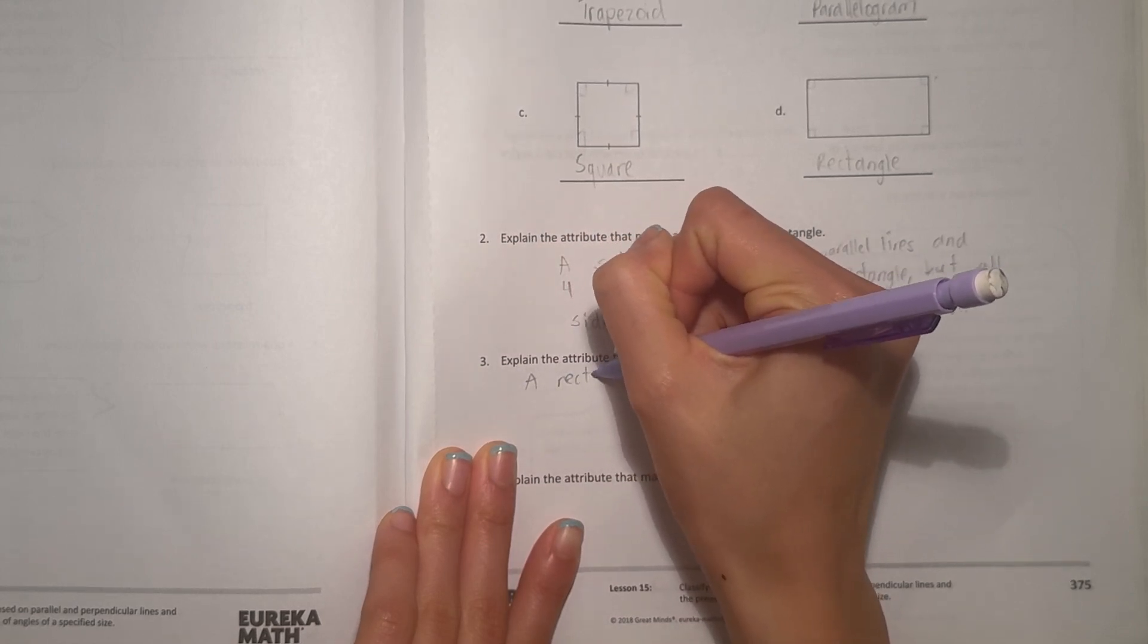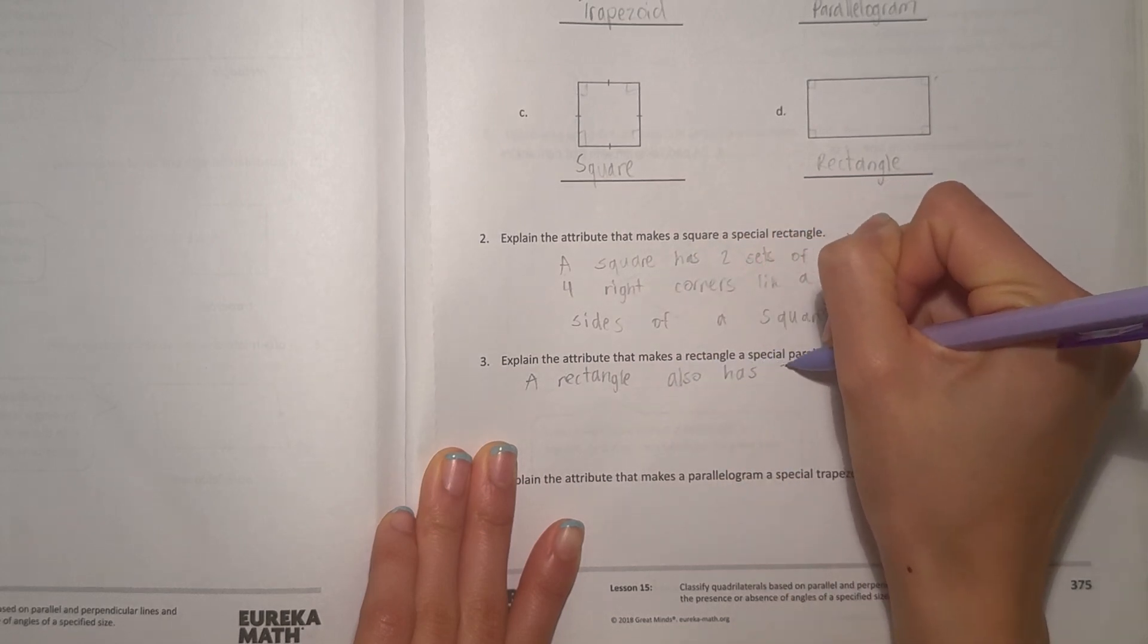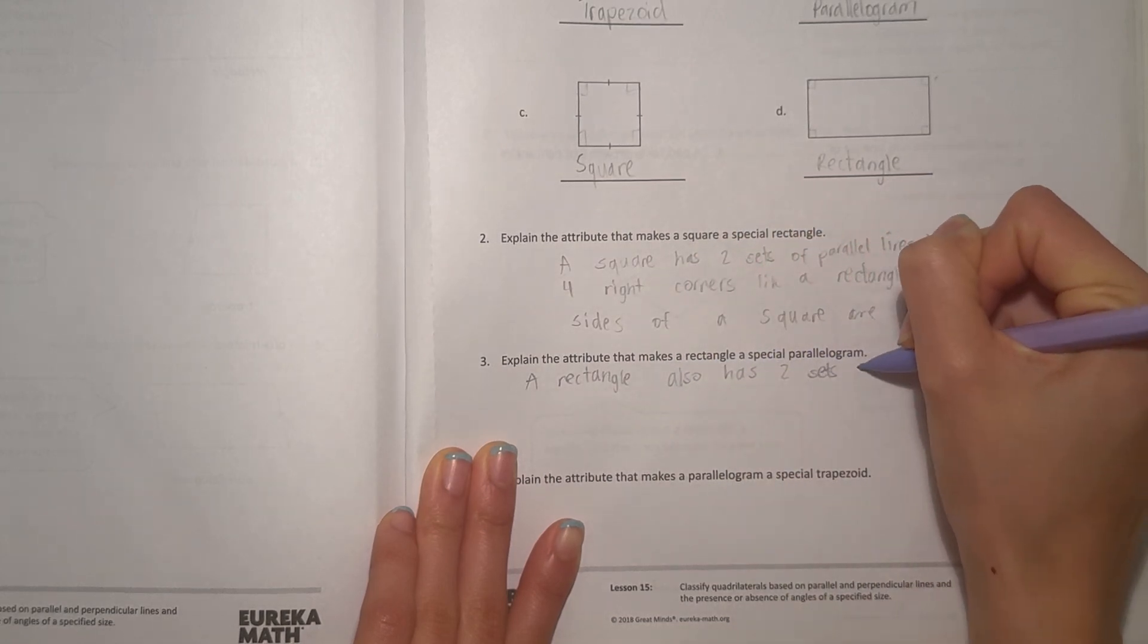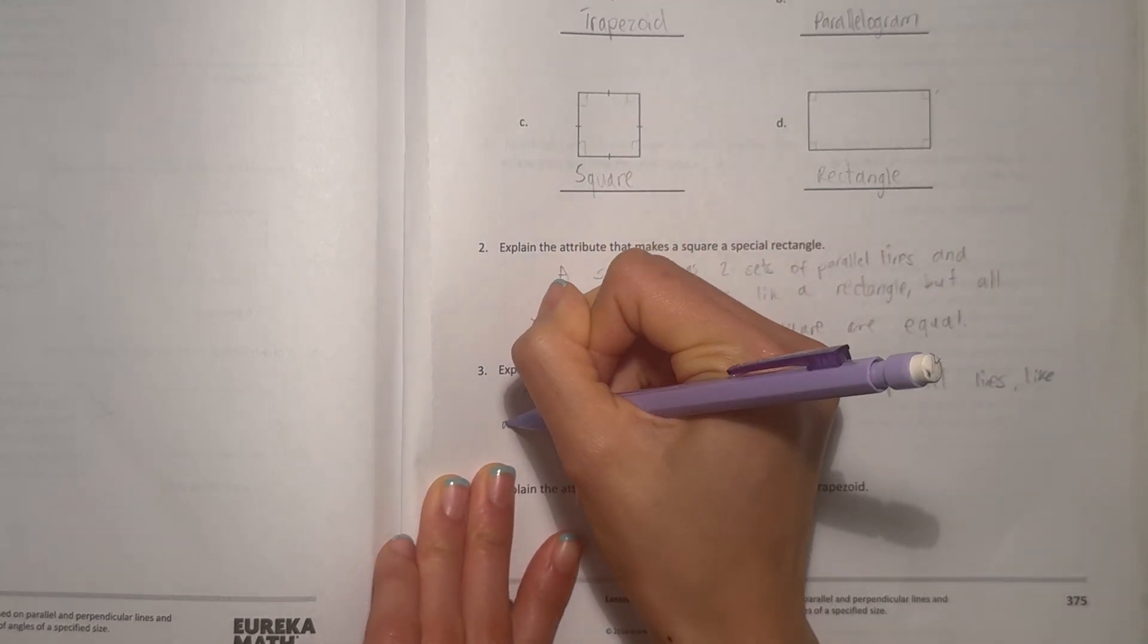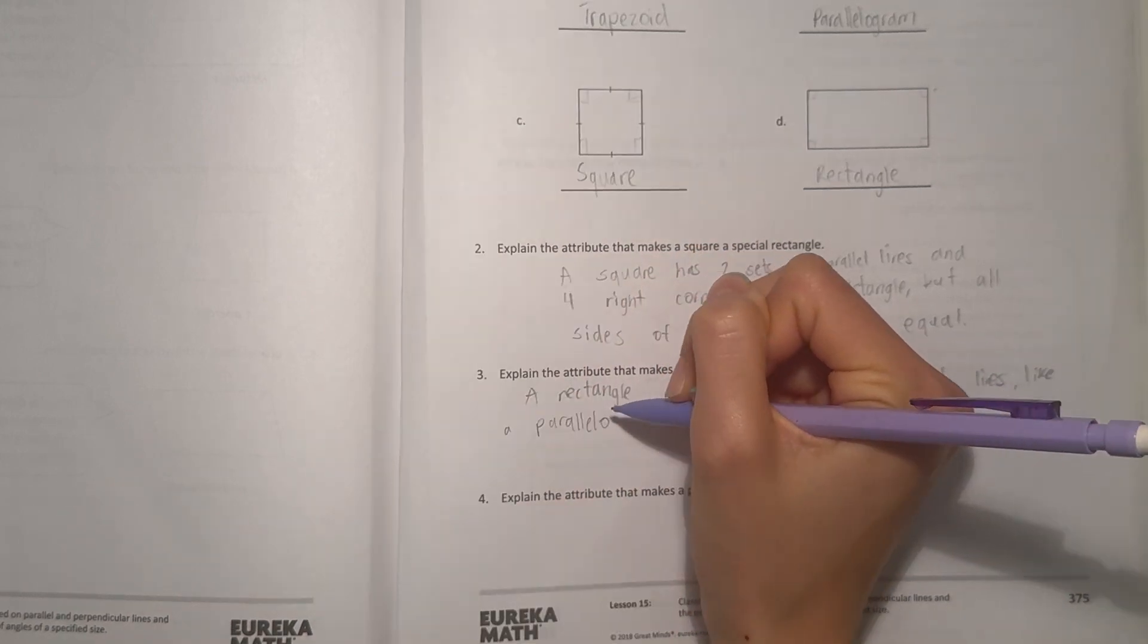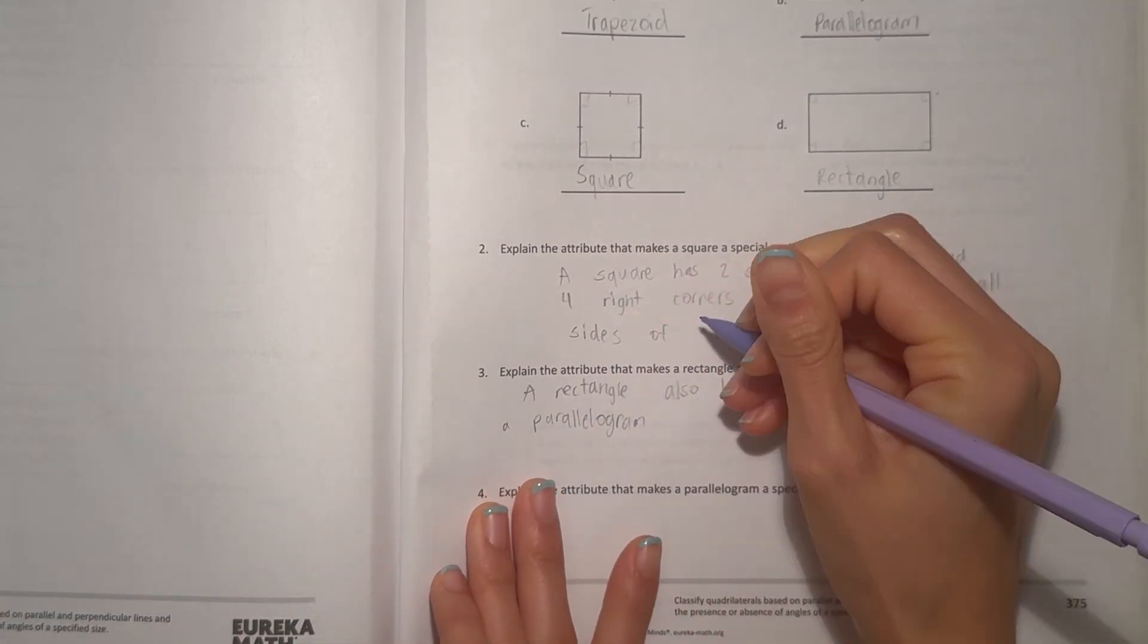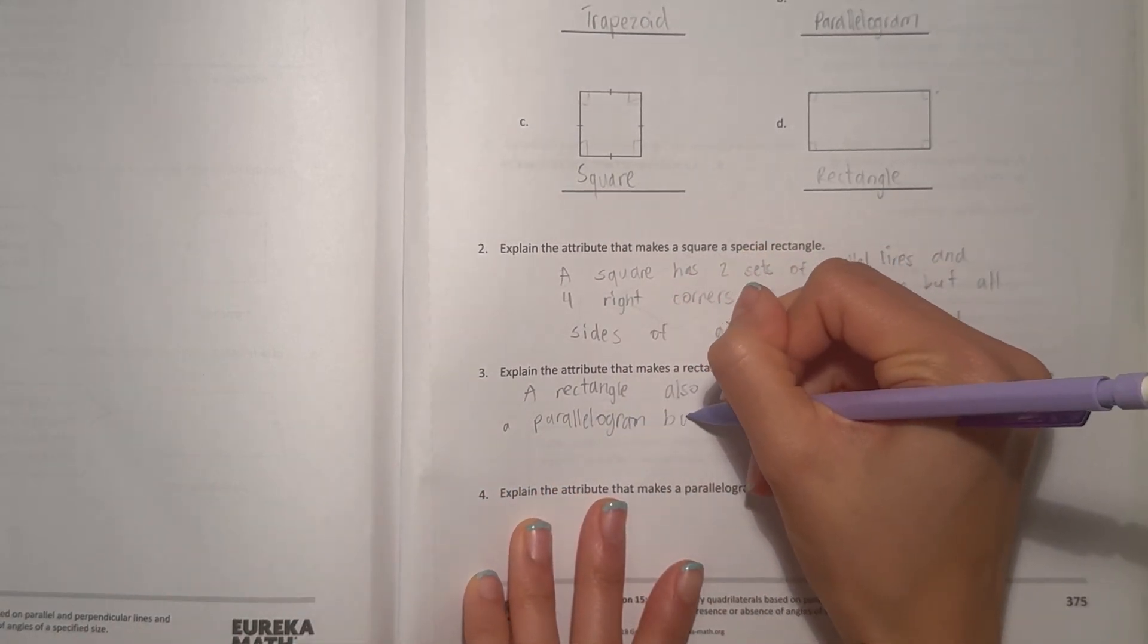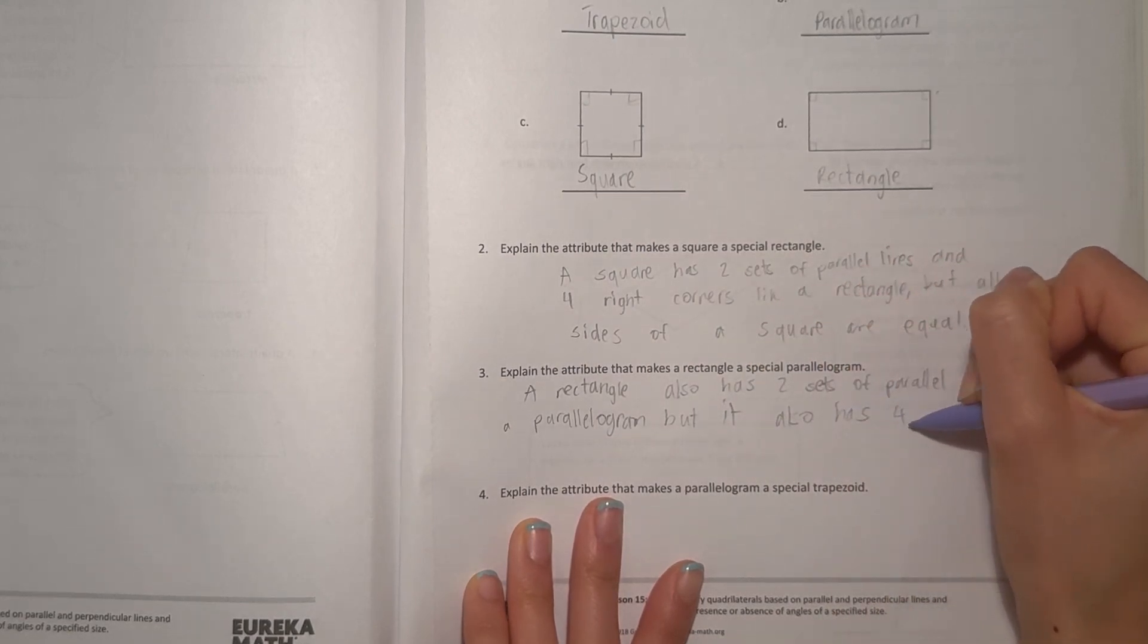the rectangle also has two sets of parallel lines, but it also has four right corners.